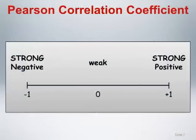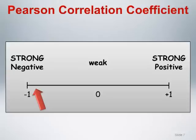We can quantify the linear correlation numerically using a Pearson correlation coefficient. This is a single number taking on values from negative 1 to positive 1 that quantifies the direction and magnitude of the linear correlation between two continuous variables. Values close to positive 1 indicate a strong positive linear correlation, values close to negative 1 indicate a strong negative linear correlation, and values close to 0 indicate weak or no linear correlation between variables.